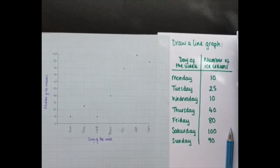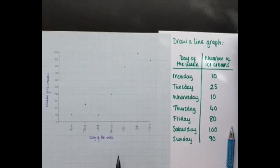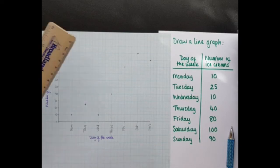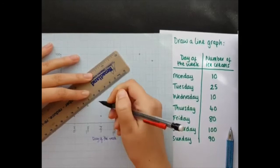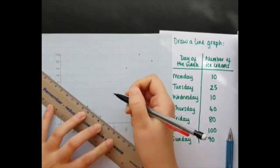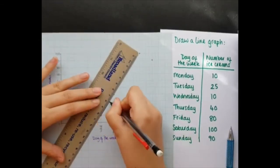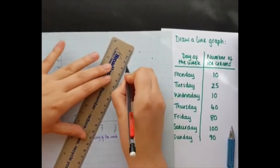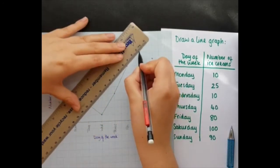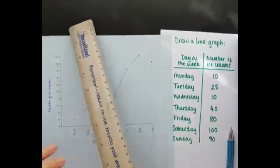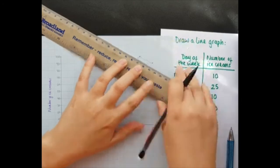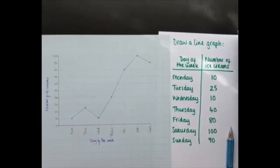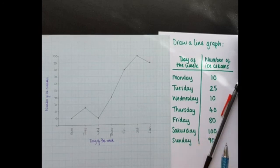Now if this was a scatter graph, I would join a line of best fit. But with a line graph, you don't. With a line graph, data changes over time, we join the points up. So I'm going to grab my ruler. And one at a time, I'm going to join these up. And there we go. So there is a line graph showing how many ice creams were sold over the days of the week.